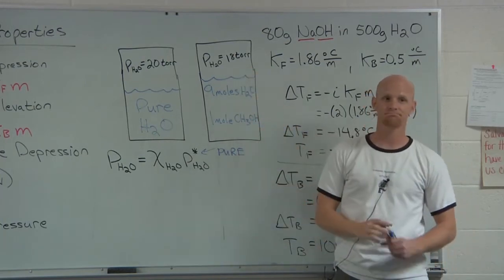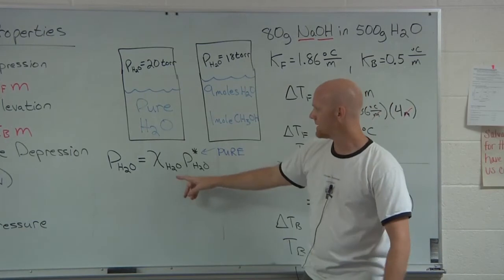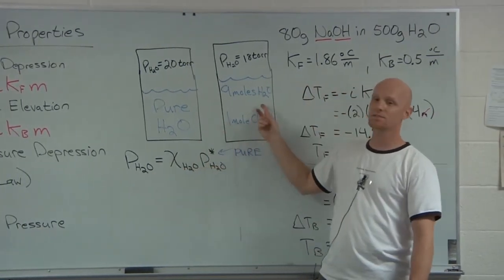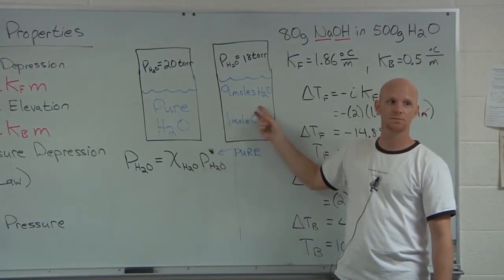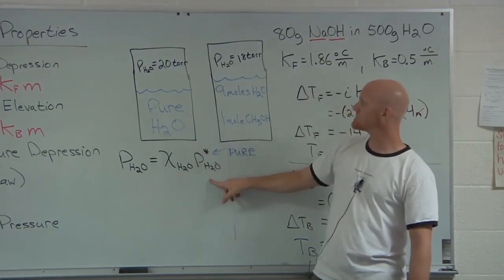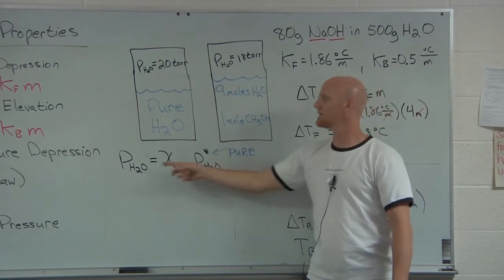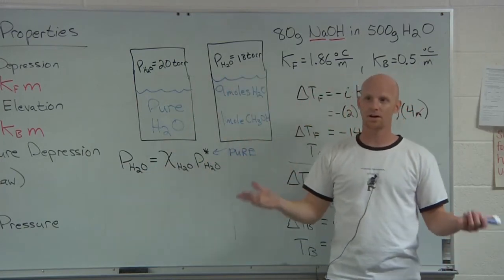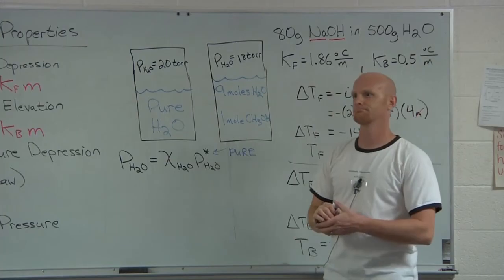Okay, so back to this calculation. What's the mole fraction of water in this solution? Nine out of ten. So nine-tenths times twenty gets us the same eighteen we just did before on a more conceptual level. Cool.